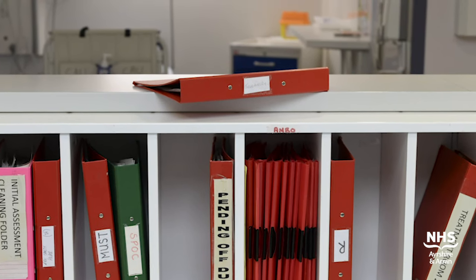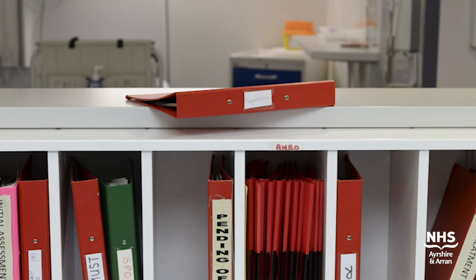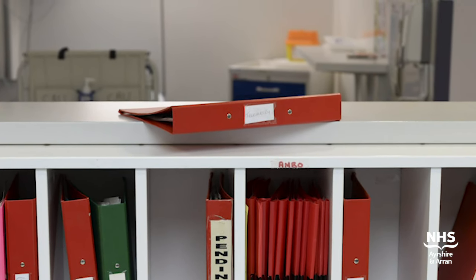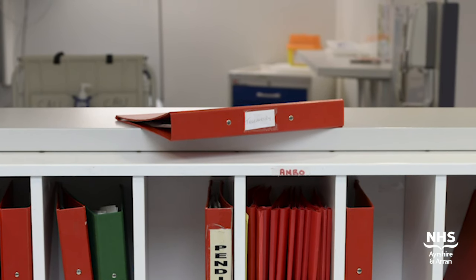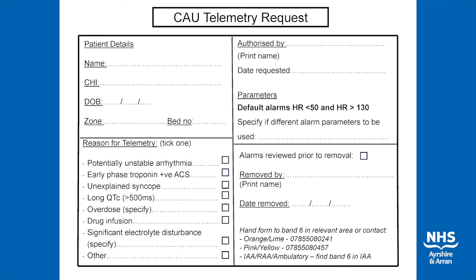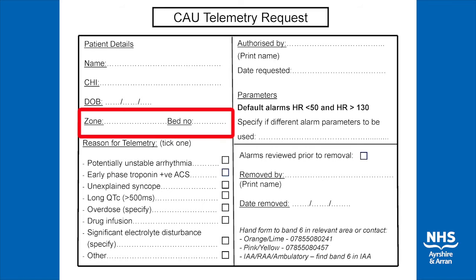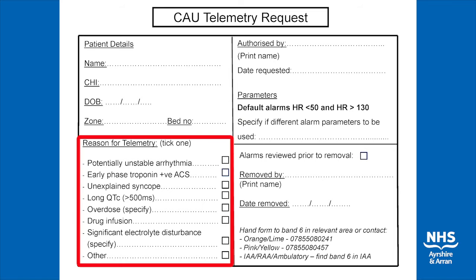This folder also contains step-by-step guides on how to perform various tasks within the telemetry system. To request telemetry for a patient on CAU, you must complete a telemetry request card. This asks for the patient's details. It is very important to include the zone and bed number. The card also asks for indication for the telemetry.